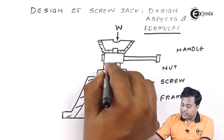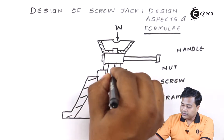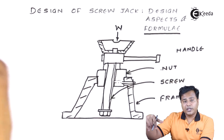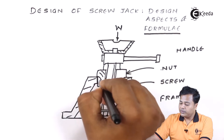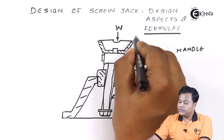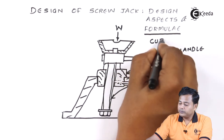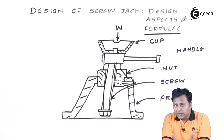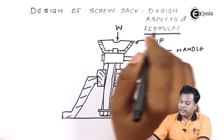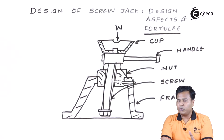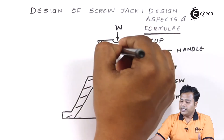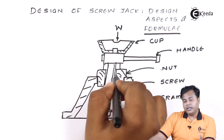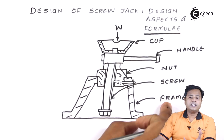The screw comes with external threads. Then this is the nut through which the screw actually passes. And there comes the cup, which is an integrated part that actually supports the load acting on that particular screw jack. This is the last thing which is the handle. When the load is kept on this particular cup, it is associated through this channel with the screw, which passes through the nut and is supported by the frame. That is how the assembly is.